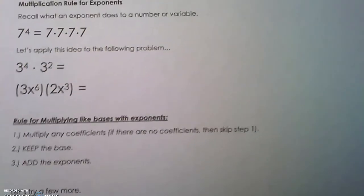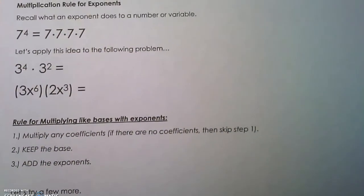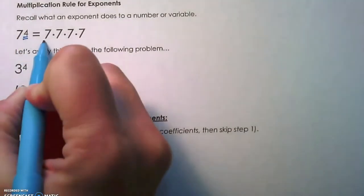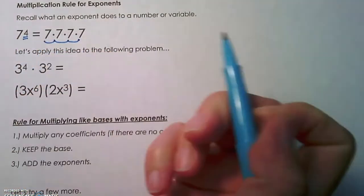In this video, I'm going to be teaching you the multiplication rule for exponents. If you just want to review what an exponent does to a number, an exponent of 4 here tells 7 to multiply by itself 4 times.